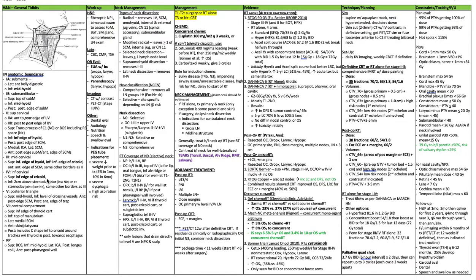Level 5 is the posterior triangle. Superior is the midhyoid, and inferior is the inferior level of the crossing vessels. The anterior border is the posterior edge of the sternocleidomastoid, and the posterior border is the anterior edge of the trapezius.